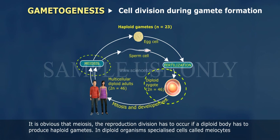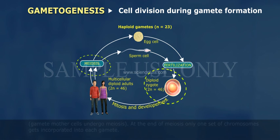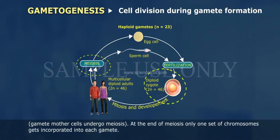In diploid organisms, specialized cells called meiocytes, or gamete mother cells, undergo meiosis. At the end of meiosis, only one set of chromosomes gets incorporated into each gamete.